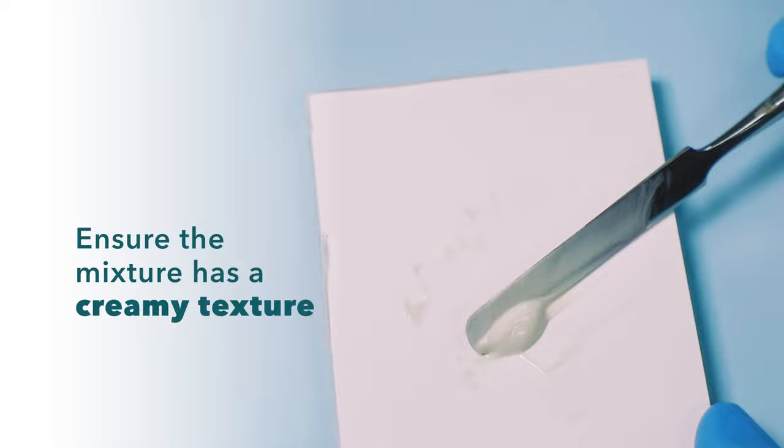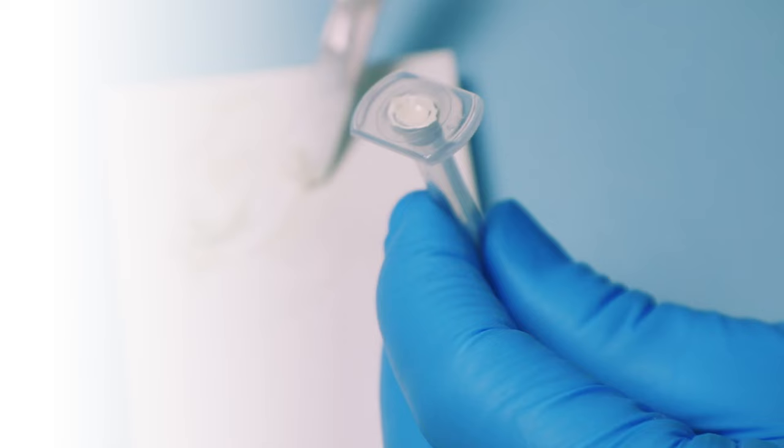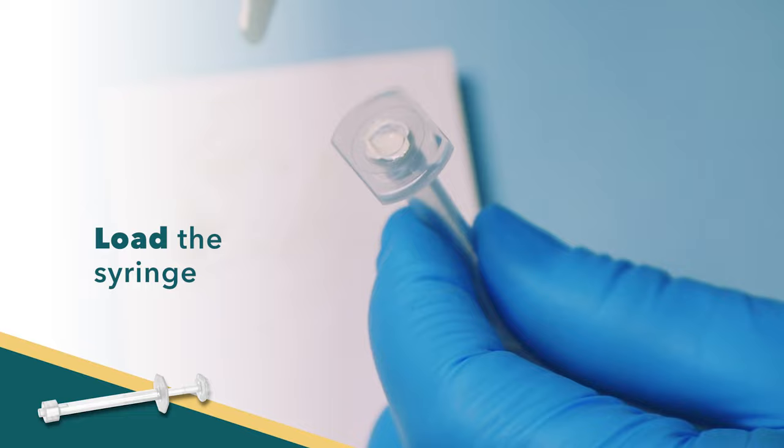Take small amounts of the mixture with the spatula and insert the sealer into the back of the skinny syringe barrel. Replace the plunger and attach a 29 gauge Navi tip single side port tip securely onto the syringe.